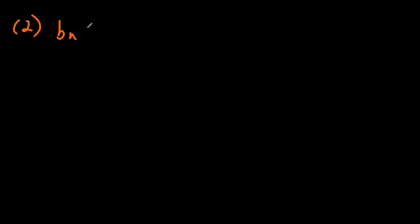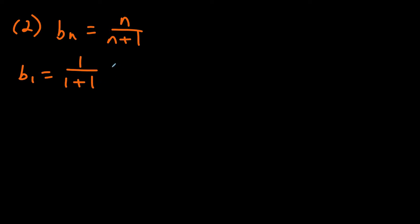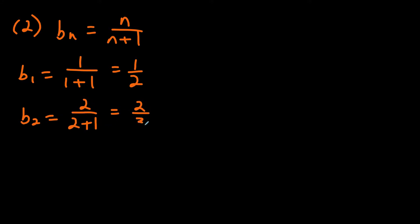Let's do the same thing for the second question. We have the sequence b sub n equals n over n plus one, and we're going to find the first five terms and the hundredth term. So b sub 1: plug in n equals one, we get one over one plus one, which equals one half. Then b sub 2: plug in two, we get two over two plus one, which equals two thirds.